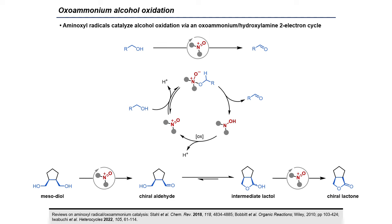In the context of asymmetric catalysis, our reaction of interest is the oxidative desymmetrization of mesodiols. A mesodiol is oxidized once to furnish a chiral aldehyde, which then undergoes cyclization to the intermediate lactol. This lactol can either be isolated or undergo a second oxidation to a chiral lactone in the presence of excess oxidant. Both lactols and lactones have high synthetic value and have been utilized in numerous total synthesis and medicinal chemistry efforts, which motivated us to develop a suitable chiral aminoxyl radical for this transformation.